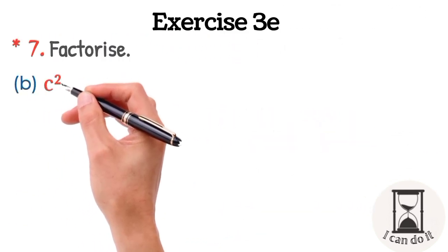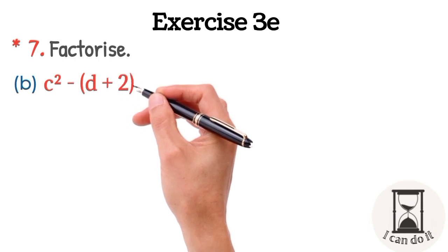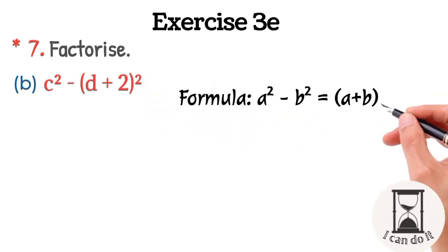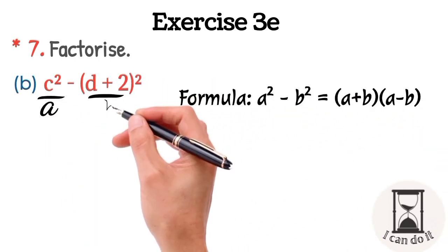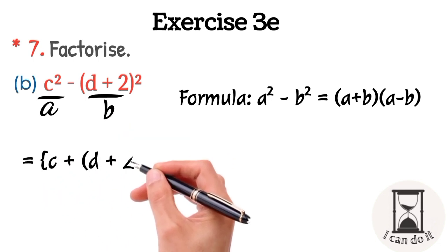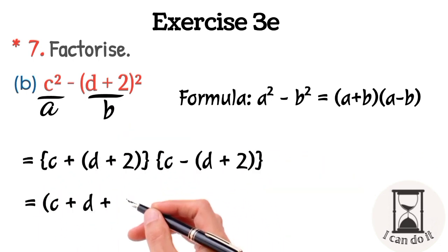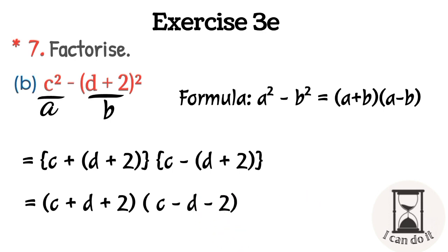Move on to part b. It's c squared minus (d plus 2) squared. Its solution would be the same as of part A. Putting the values in the formula, c plus (d plus 2) into c minus (d plus 2). Simplify it and we got the answer.